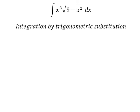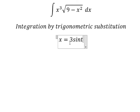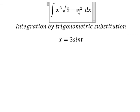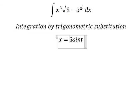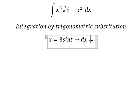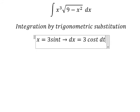I will put s equal to 3 sin(t). If I substitute this in, we have 9 sin²(t). With number 9 we can do factorization: 1 minus sin²(t), which we change to cos²(t). Then simplifying the square root, ds becomes 3 cos(t) dt. The derivative of sin(t) gives us cos(t).